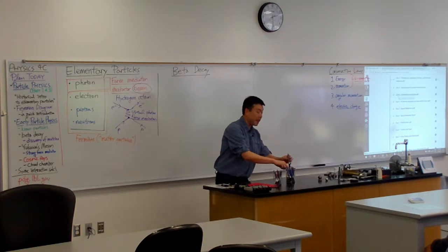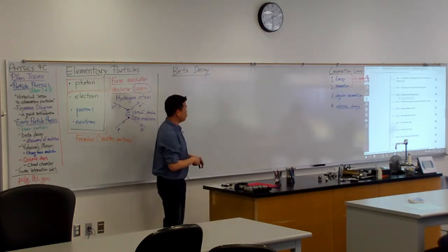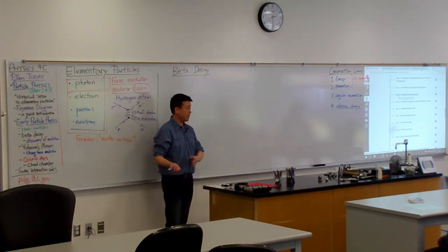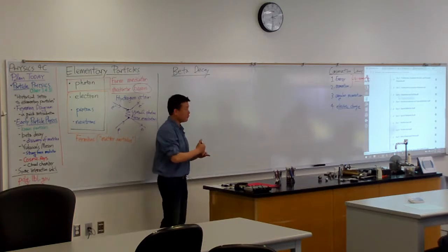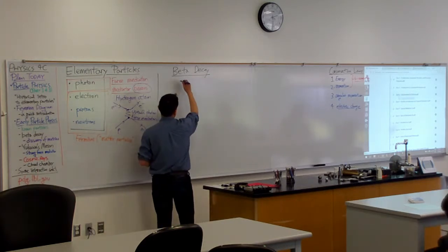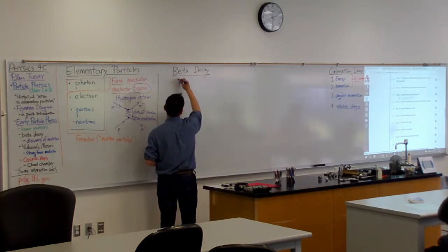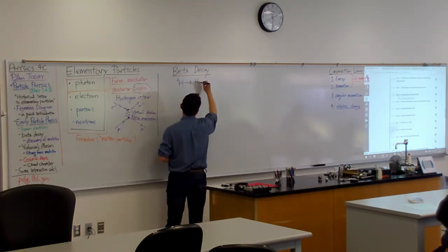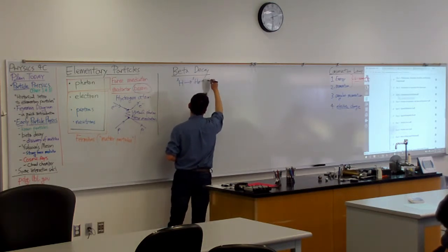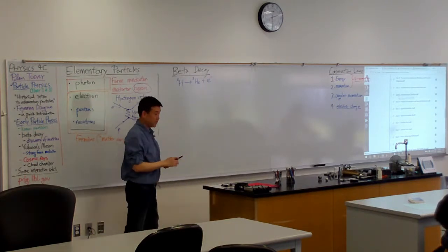Yeah, so beta rays are electrons. Beta decay is a nuclear interaction which ends up with a process that ends up with the emission of an electron. The particular process that we are looking at was where a tritium, hydrogen-3, goes into helium-3 and emits an electron. That's what we looked at last time, right?